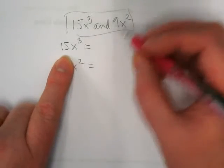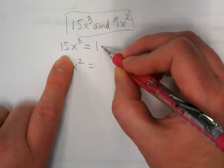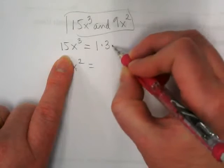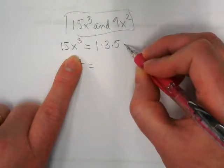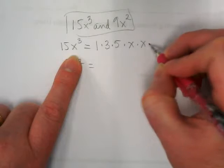What are the factors of 15 first? One, because that's positive, times three times five. And then how many X's? Three. One, two, three.